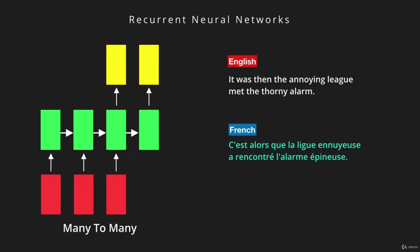There are many other types of networks with many different applications, which makes these sequential networks much more powerful than traditional neural networks. Sequential networks are not restricted to a fixed number of computational steps, allowing us to create much more intelligent applications.